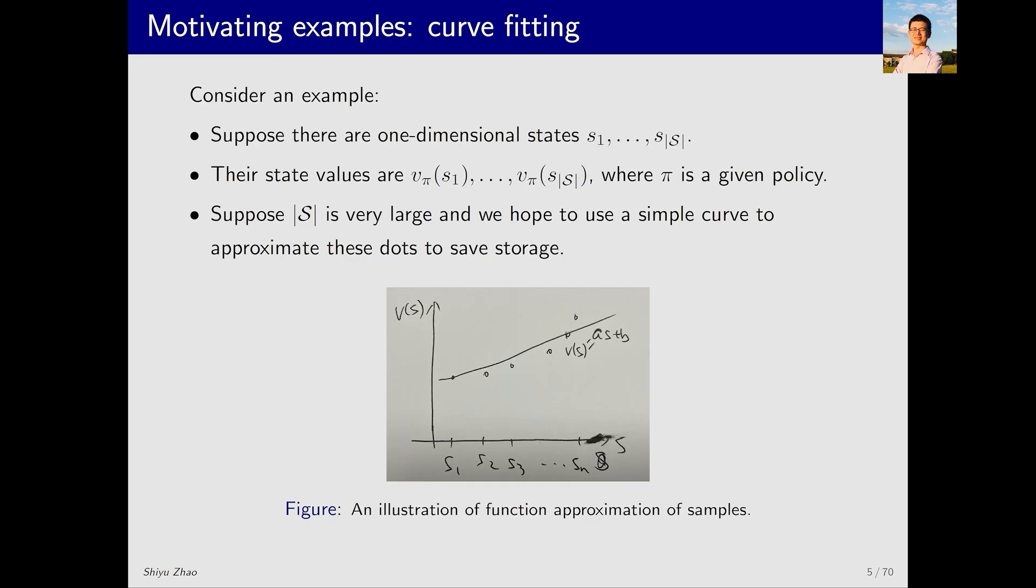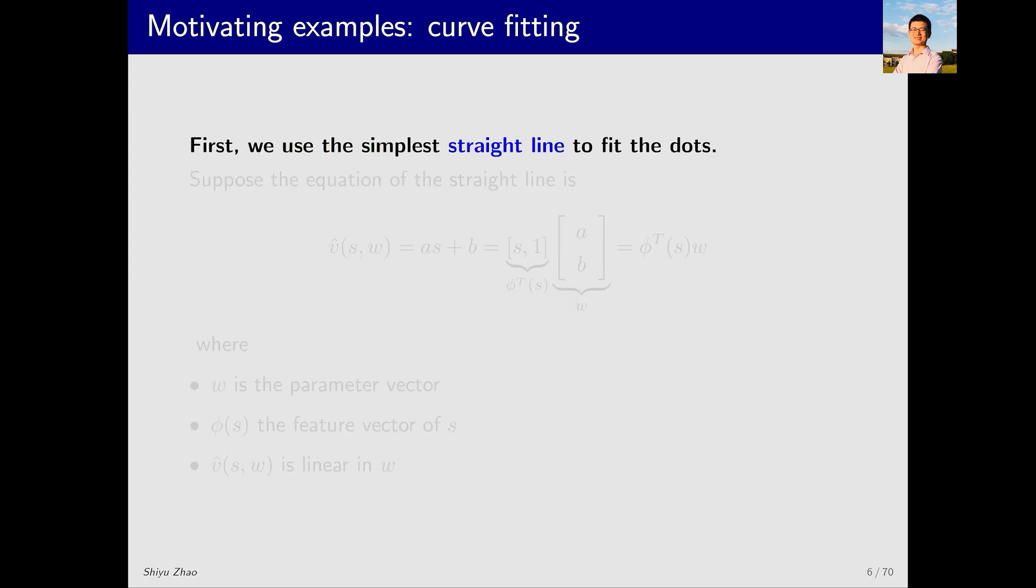Let me introduce the basic idea of value function methods through an example. In this example, we have n states from s1 to sn, where this symbol represents the total number of states in the state space, assumed to be n. Each state here corresponds to a state value. The vertical axis in this graph represents the state value, and these state values are depicted by these discrete points. If we use the tabular method, since the number of states is very large, if I want to store all of them, it will take a lot of memory. Is it possible to represent these discrete points with a curve, or use this curve to represent these points? Why use a curve? That is because the number of parameters corresponding to this curve is very few. By storing fewer parameters, we can store all these state values.